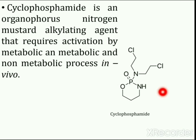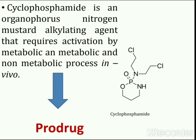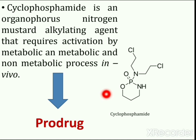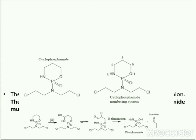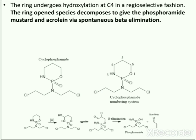Cyclophosphamide is a prodrug that requires cytochrome P450-mediated activation to 4-hydroxycyclophosphamide, and it contains all the advantages that can be utilized in anti-cancer drug therapy. The cyclophosphamide ring undergoes hydroxylation at C4 in a regioselective fashion. The ring-opened species then decomposes to give phosphoramide mustard and acrolein via spontaneous beta-elimination. The nucleophilicity of the nitrogen in the generated phosphoramide mustard is reduced by the phosphoramide group, resulting in greater selectivity for stronger nucleophiles like guanine, which produces better selectivity and ultimately better activity.